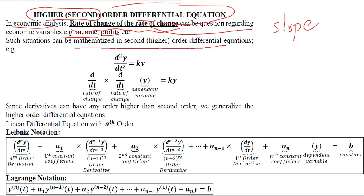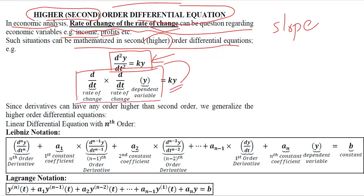We can include these higher order derivatives or second order derivatives in the equation like this. For example, the second order derivative of y with respect to t equals ky. This is one of the possibilities we have started with, where the right-hand side remains the same. Here we have the dependent variable, its first derivative, and then its second derivative. The second order derivative tells us about the rate of change of the rate of change in the dependent variable.